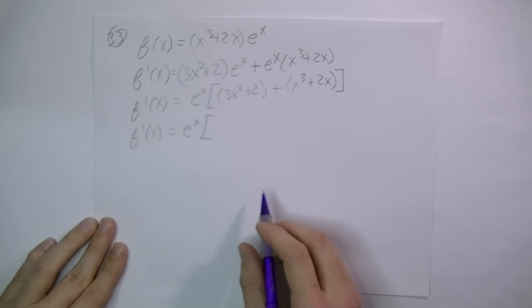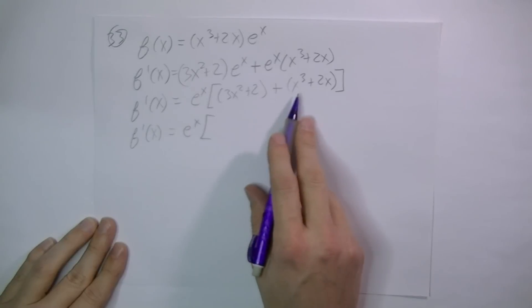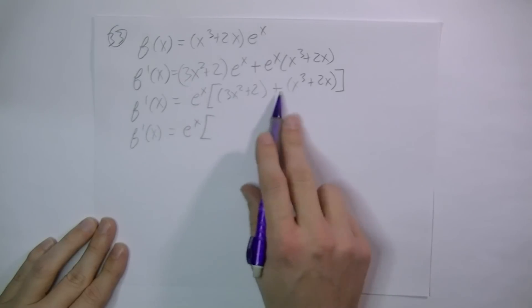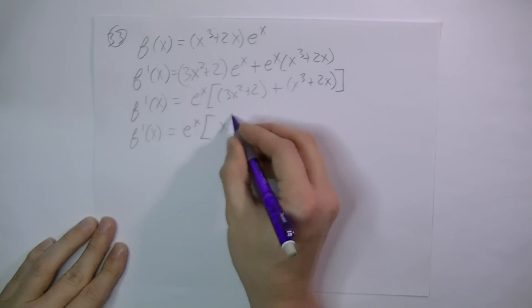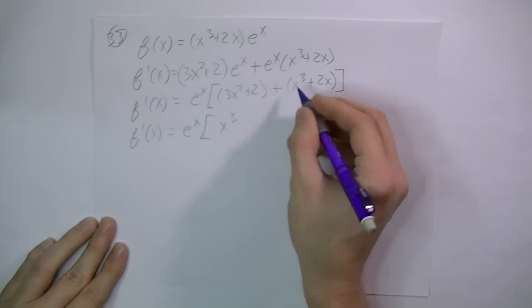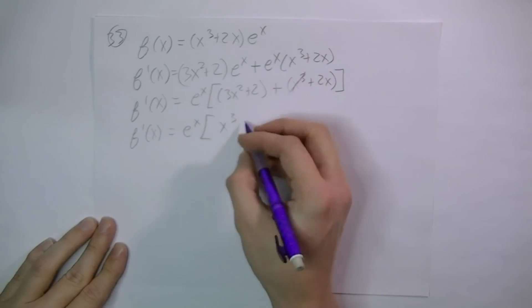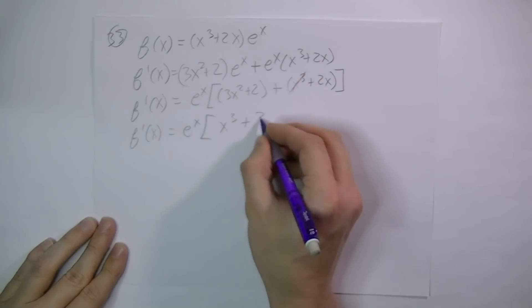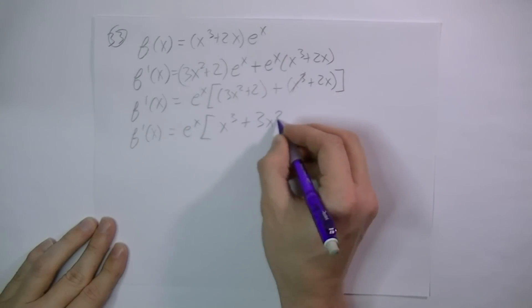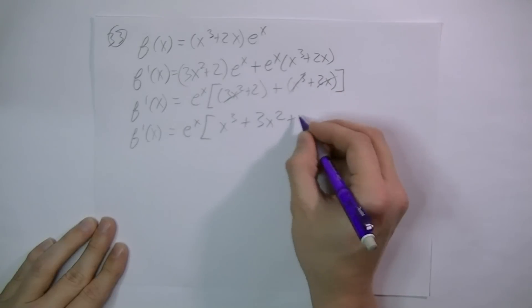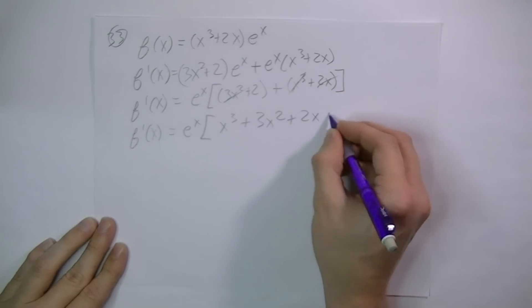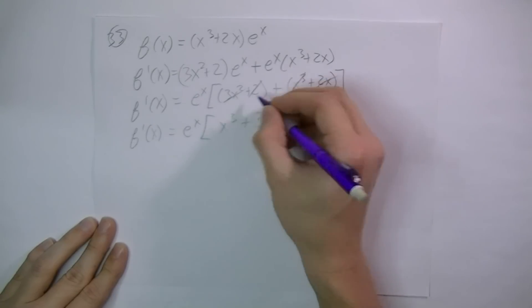I'm just going to rearrange the terms here: x cubed comes first, then 3x squared, then 2x, and 2.